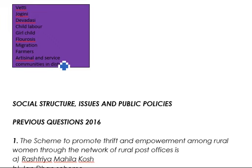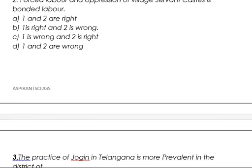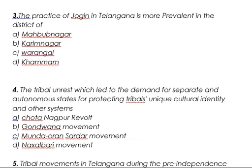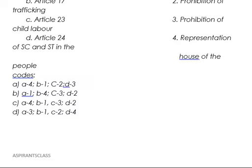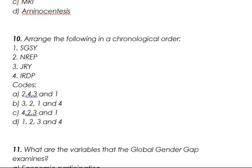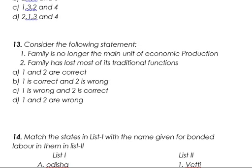The next most important step is to go through all the questions in the previous question paper, which was held in the year 2016. For example, question number one: 'The scheme to promote thrift and empowerment among rural women through the network of rural post offices is...' and question number two is a consider-the-following-statements type. As you go through these questions you will understand the type of questions asked, the level of difficulty, and the topics that need to be focused on more.